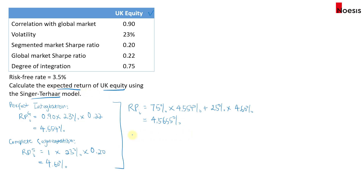To estimate the expected return, the expected return R sub I equals the risk-free rate of 3.5% plus the risk premium of 4.5655%, giving us an expected return of 8.0655%.